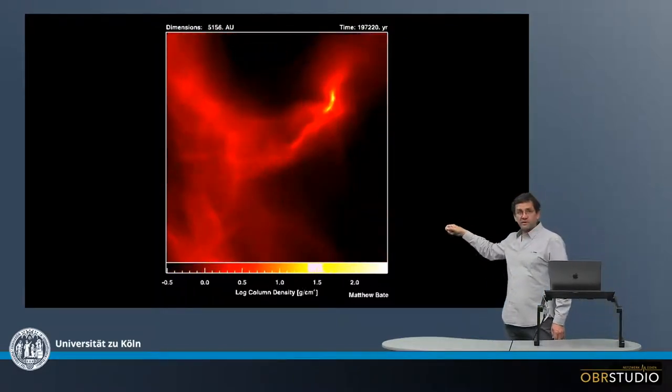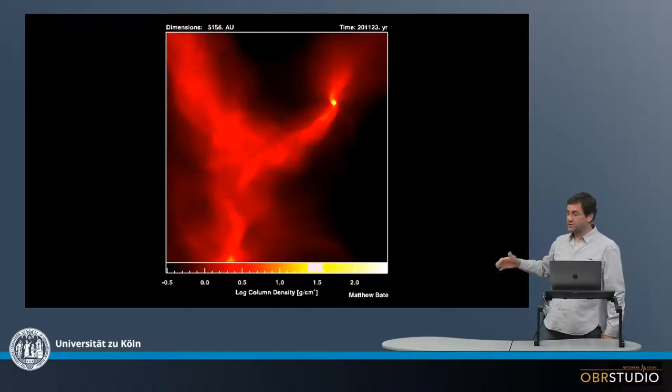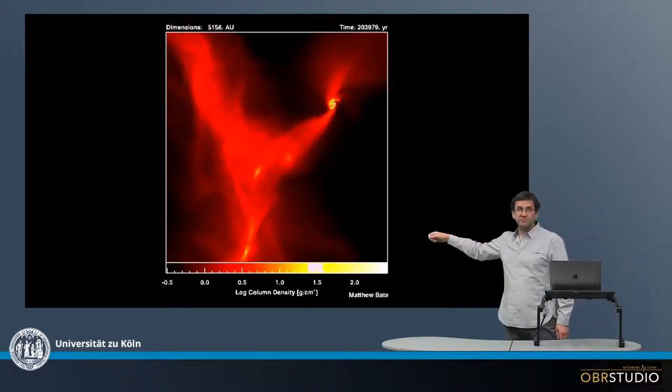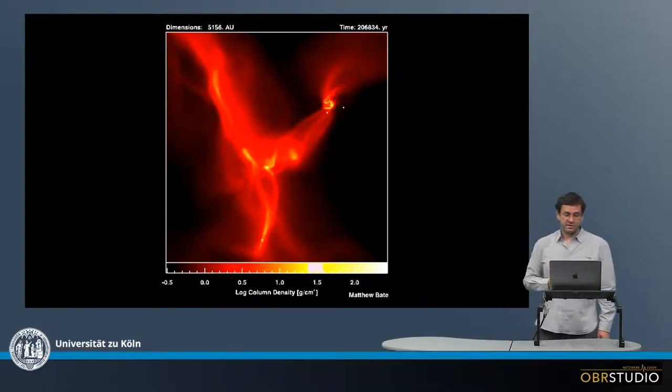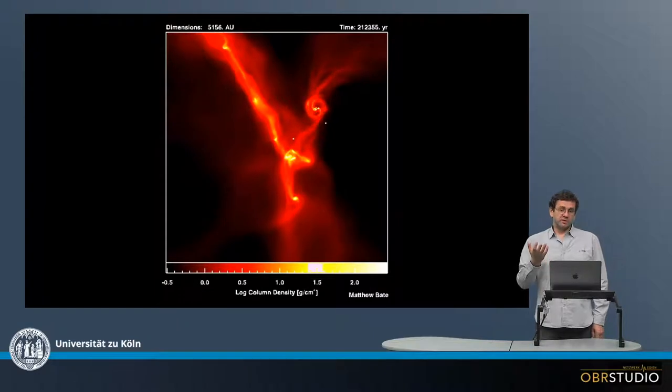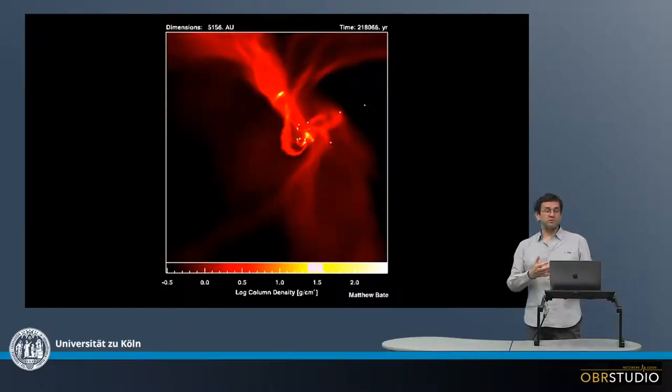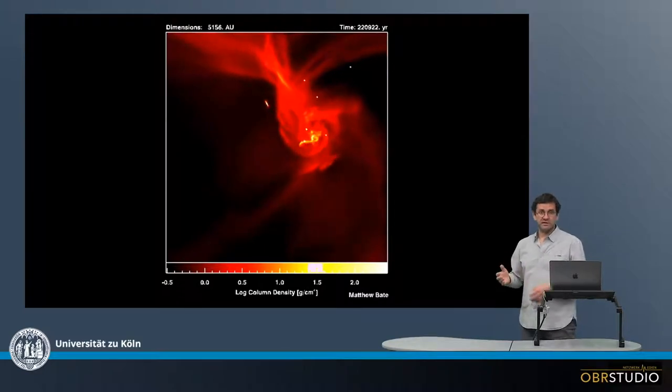And then at some point in some of the filaments, the density becomes high enough so that the stars can form, represented here as these white dots. And one important thing that is seen here is that in this case there's not only one star forming, but there are many stars forming.